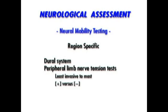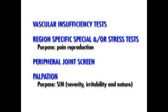Following completion of neurological conductivity testing, a check for vascular insufficiency is performed as appropriate for each region, and thereafter region-specific special and/or stress tests are a vital component of the spinal scan. The primary function of these tests is pain reproduction to allow you to further assimilate your gathered data and steer you in an appropriate biomechanical examination. Details of these pain reproduction tests will be visited in each respective scan. If indicated, a peripheral joint screen is then done to determine potential ramifications to or involvement from a peripheral joint and its relation to spinal pathology. Lastly, palpation is performed.